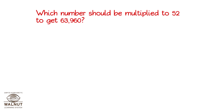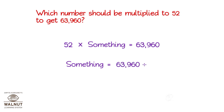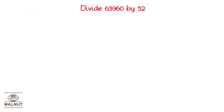Which number should be multiplied to 52 to get 63,960? We know 52 into something equals 63,960, so we need to find out what that is. That means something is actually 63,960 divided by 52. The quotient will give us our answer. Let us do the long division.